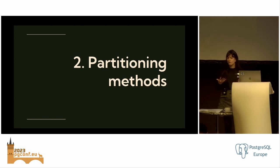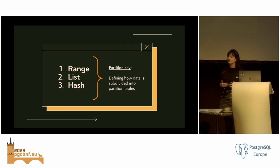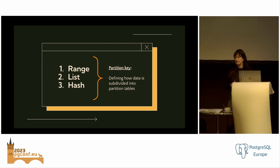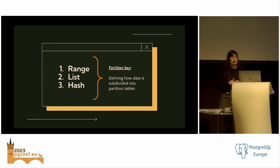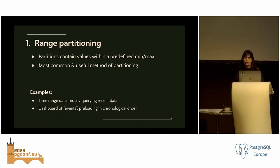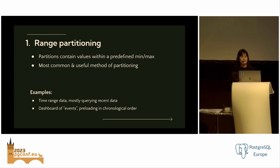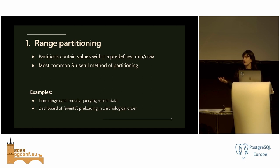Postgres has three native partition types: range, list, and hash. Each has a different type of partition key — which defines how data is subdivided onto partition tables. Range partitioning is, in my opinion, the most common and often most useful method. In a range partition, partitions include values with a defined min and max. Good examples are time-range data, especially if you're often querying more recent data — a dashboard of events, IoT data, things like that.